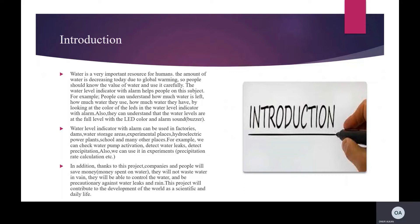The water level indicator with alarm can be used in factories, dams, water storage areas, experimental places, hydroelectric power plants, schools, and many other places. For example, we can check water pump action, detect water leaks, and detect precipitation. We can also use it in experiments, for example, for precipitation rate calculation. Thanks to this project, companies and people will save money — they will not waste water. They will be able to control water use and be precautionary against leaks and rain. This project will contribute to the development of the world in both scientific and daily life contexts.